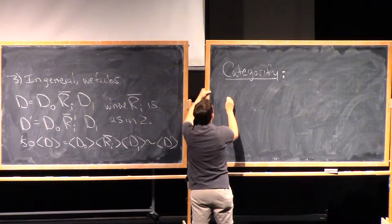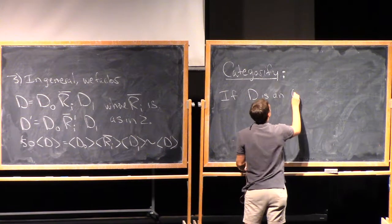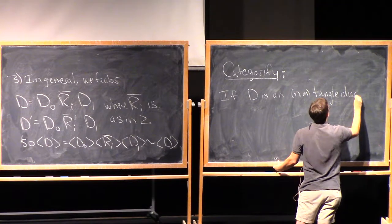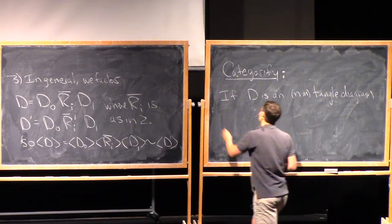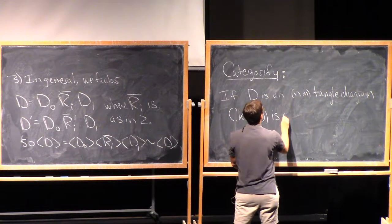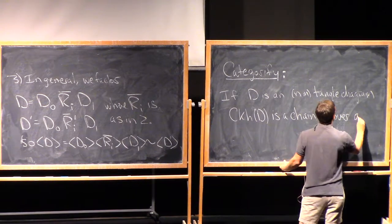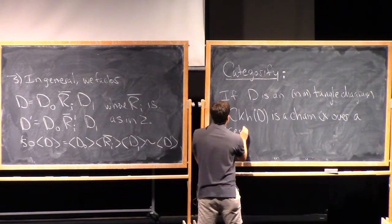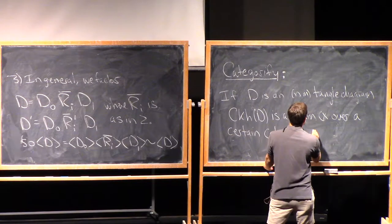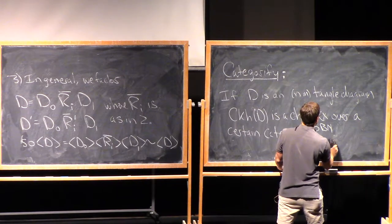If D is an NM tangle diagram, then CKH of D is a chain complex over a certain category that I'll call CBN, so this is Bar-Natan's category, and I'll write the N and the M here.